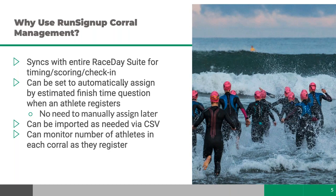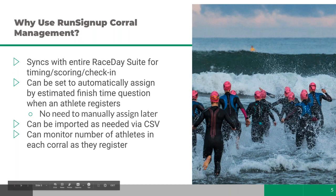You can have corrals set to automatically assign by estimated finish time within registration. For example, faster runners go first, then the next group — all set automatically. You can also import corrals by CSV; the CSV just needs the registration ID and corral name. This is useful for triathlons with randomized age groups, Clydesdales, or elites. You can also monitor the number of athletes in each corral as they register.